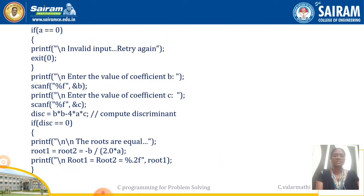Next task is to get the inputs. The value of coefficient a is stored in the variable a, scanned using the scanf statement. After that, if a is equal to 0, we cannot compute the roots — that is an invalid input. So we can exit from the program. Otherwise, we continue scanning the next variables b and c. So three inputs are scanned and obtained.